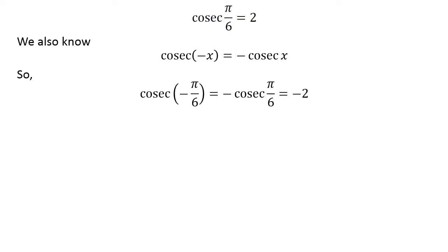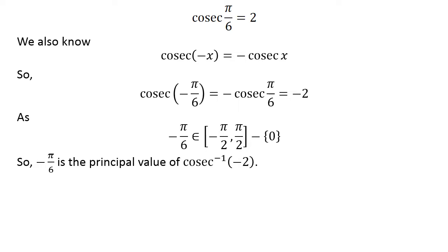So, cosec(-π/6) = -cosec(π/6) = -2. As -π/6 lies in the closed interval [-π/2, π/2] except 0, -π/6 is the principal value of cosec^(-1)(-2).